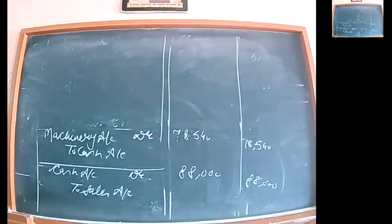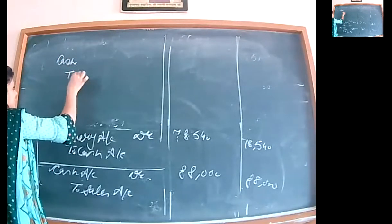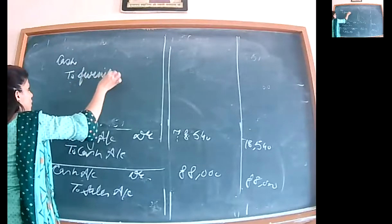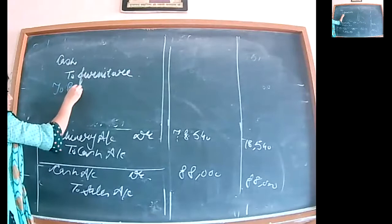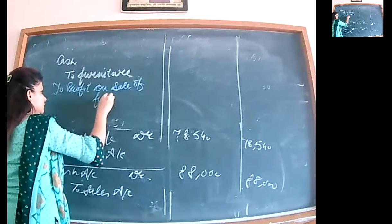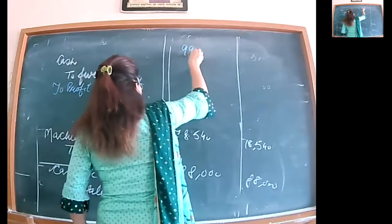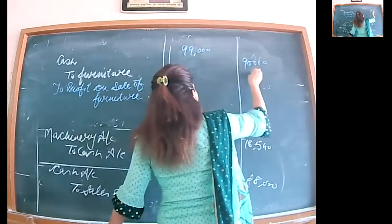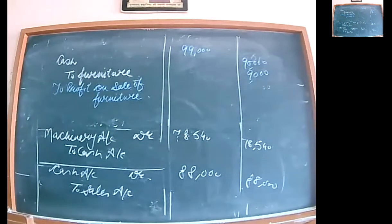Machine/furniture transaction: cash account debited to furniture, to profit on sale of furniture. Rs. 90,000 profit will be credited in the journal entry. Narration: being old furniture sold at profit.